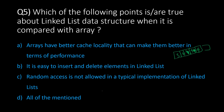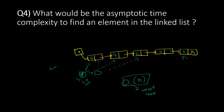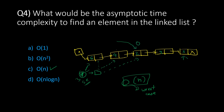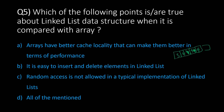In a linked list, since search complexity is O(n), you cannot randomly access an element — you have to start from the head and compare sequentially. So linked list uses sequential access, not random access. Therefore, option D — all of the above — is the right answer for the fifth question, as all three points are true when linked lists and arrays are compared.